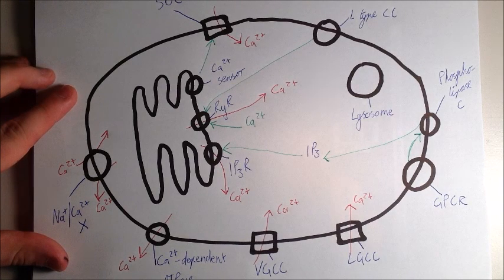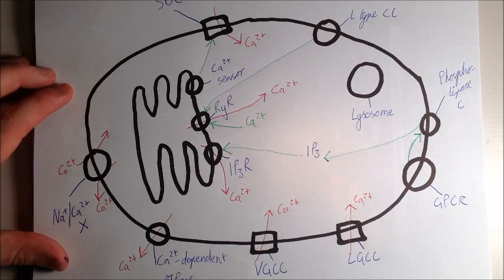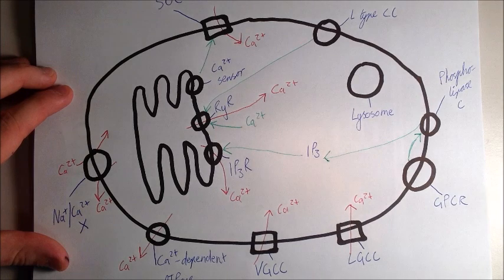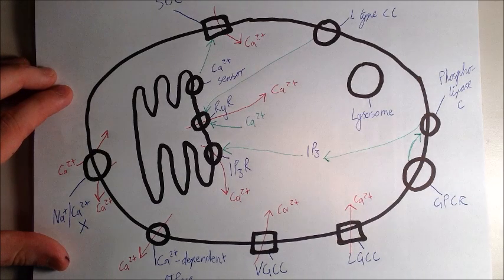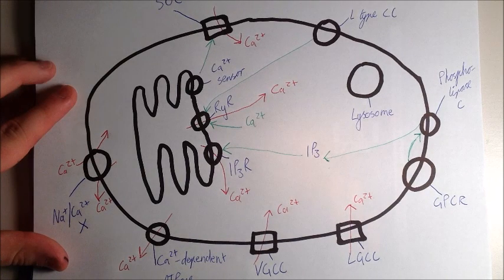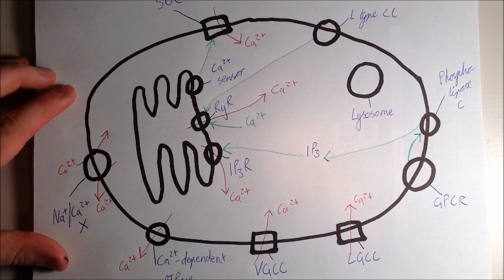But, all you need to remember is that certain factors can allow calcium to get in here. And, it can use an exchange of protons to allow calcium out. So, protons will go in, calcium can come out. But, like I said, good to know, but not quite as important as the receptors on the sarcoplasmic reticulum and the plasma membrane.